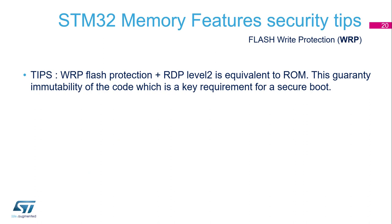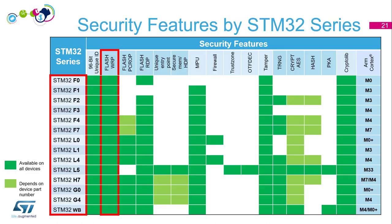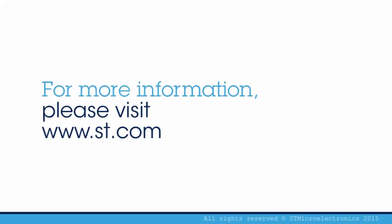A key tip: combining WRP flash protection with RDP level 2 is equivalent to ROM. This guarantees immutability of the code, which is a key requirement for a secure boot. This feature is available on all STM32 families. Now let's switch to the hands-on.